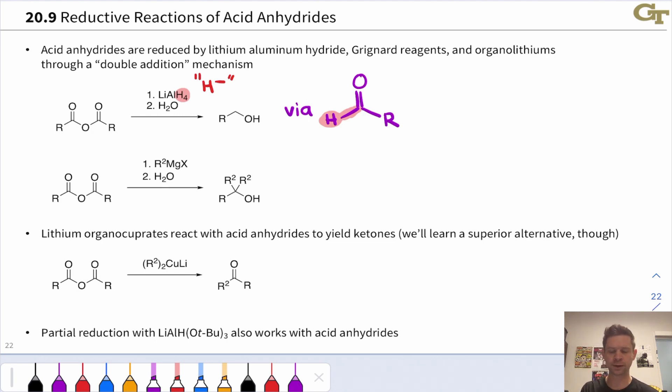If we treat with a Grignard reagent, two equivalents of the Grignard reagent add to an acid anhydride to give a tertiary alcohol product via a ketone intermediate. The only difference between these reactions and the acyl chloride reactions is that there is a carboxylate leaving group involved. Otherwise, they're exactly the same conceptually as the reductions of acyl chlorides.